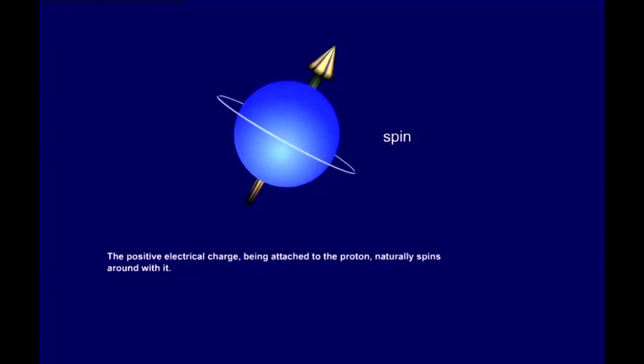The positive electrical charge, being attached to the proton, naturally spins around with it. And what is a moving electrical charge? It is an electrical current.